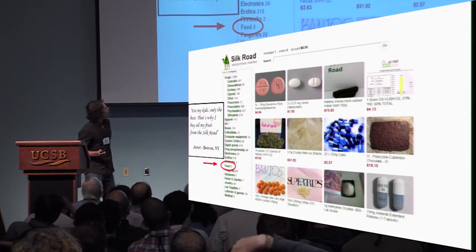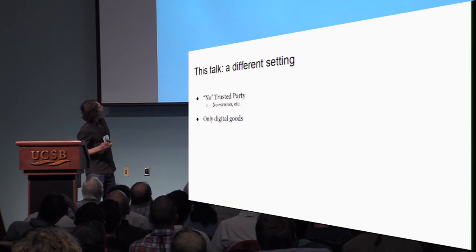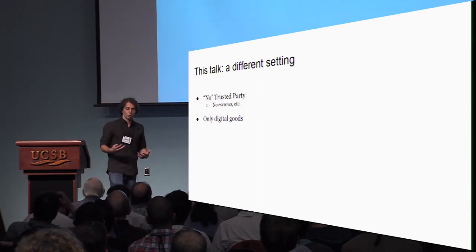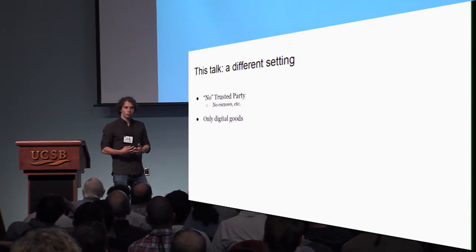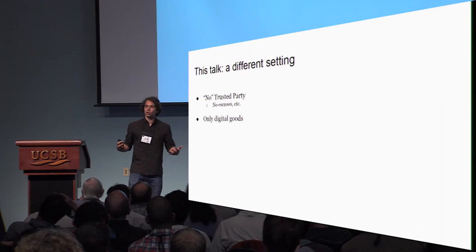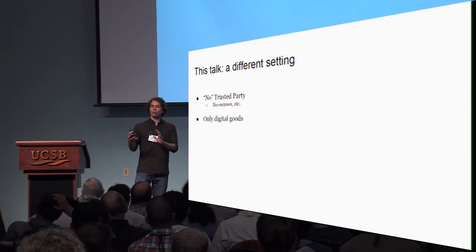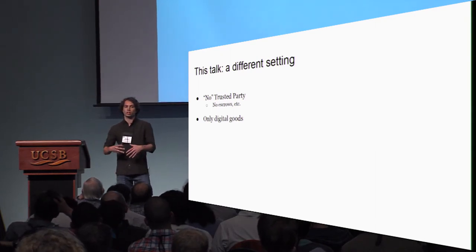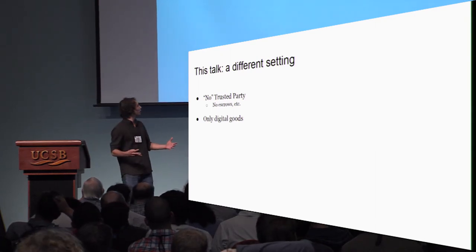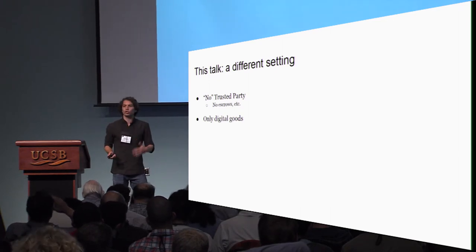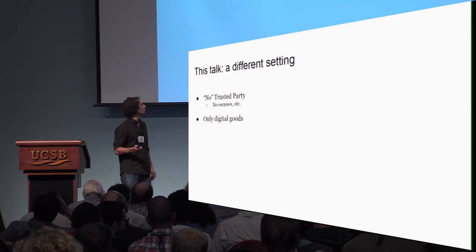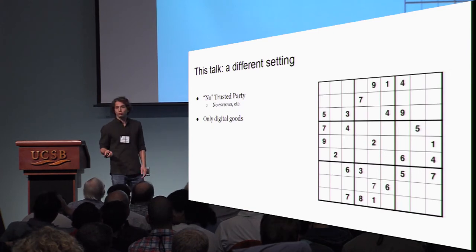Today, however, I'm going to start from different assumptions. I want to tell you how we can have this sort of fair exchange — fair payments on Bitcoin — without explicit escrow, without an explicit trusted party. We're going to talk about digital goods: songs, theorems, or solutions for Sudokus.